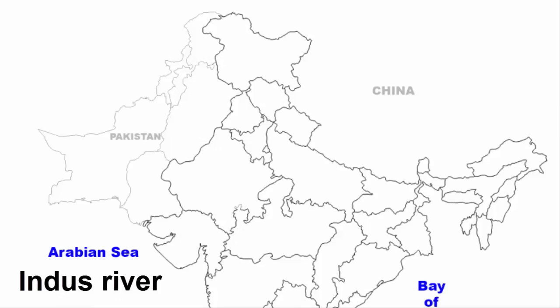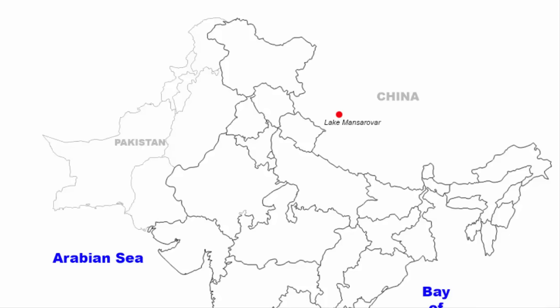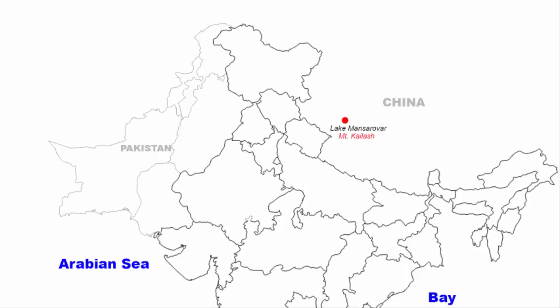First we will look at the route of the main river, which is the Indus River. The Indus River originates in the Tibetan Plateau, near Lake Mansarovar. As you can see, it is within the jurisdiction of China. This is also the place where you will find the famous Mount Kailash, which is considered as the home of Lord Shiva and is a holy and sacred site of the Hindu religion.